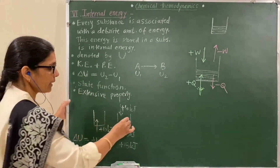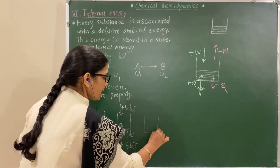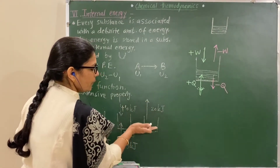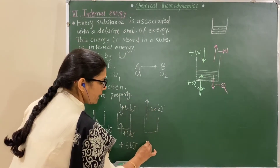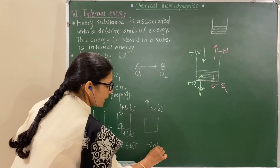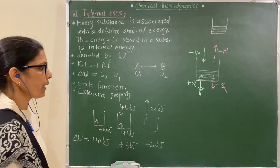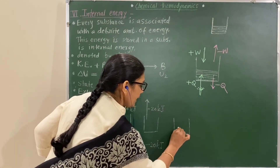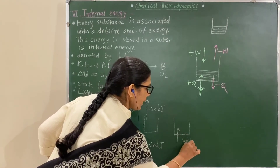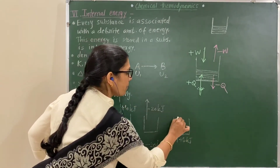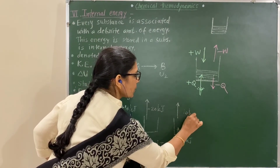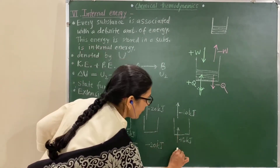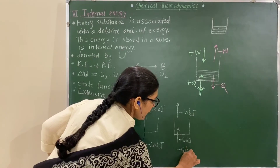Example 4: Heat added is plus 5 kJ, and work done by the system is 10 kJ (minus). So delta U equals plus 5 minus 10 equals minus 5 kJ. Example 5: Work done on the system is 25 kJ (plus), and heat removed is 10 kJ (minus). Therefore delta U equals plus 25 minus 10 equals plus 15 kJ.